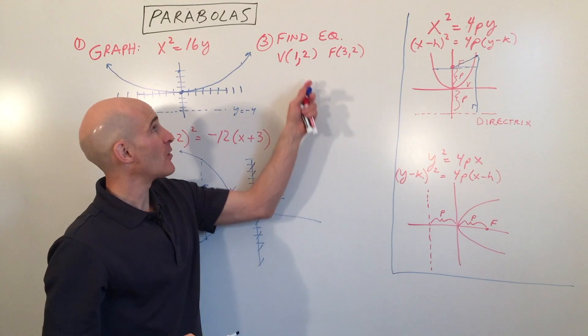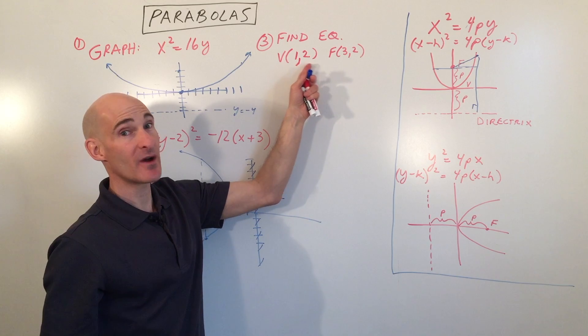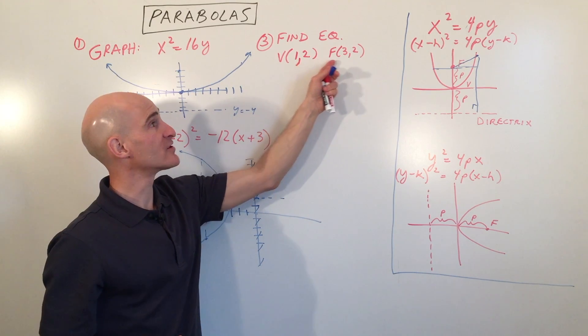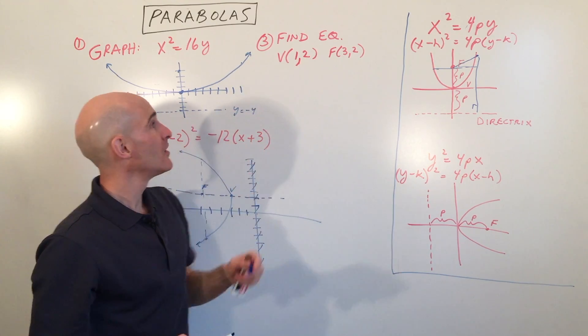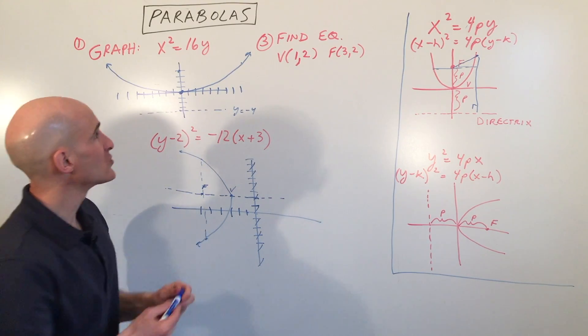Now the last example I want to show you is how do you work backwards to find the equation if they're giving you some information about the parabola? Say, for example, the vertex is at (1, 2), and the focus is at (3, 2). How do we find the equation? What I like to do is I like to draw a sketch just so I can visualize it a little bit.